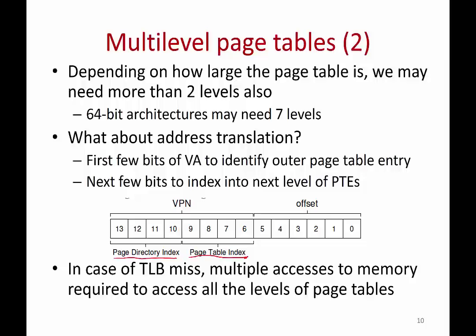In the case of multi-level page tables, a TLB miss is very expensive. If you don't have the translation in the TLB, you have to access the outer page table, look up a frame number, then access the inner page table, and continue through multiple levels of memory accesses until you find the desired frame number. The MMU only knows the starting address of the outermost page table and must walk the page table over many levels to get to the desired entry. Multi-level page tables in general incur a large amount of overhead on a TLB miss.